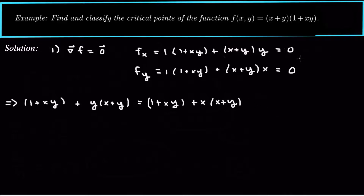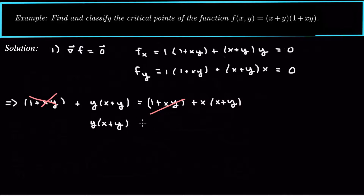Since they're both equal to zero we can equate them and cancel out some terms. The one plus xy terms cancel, which tells us that y times x plus y should be equal to x times x plus y.